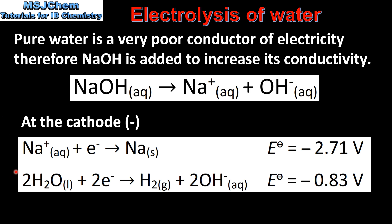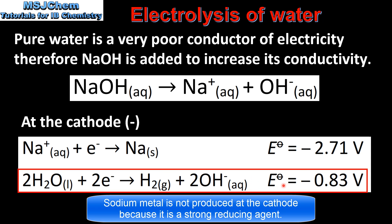Here are the two possible reactions that could take place at the cathode: the reduction of sodium ions to form sodium metal, and the reduction of water to form hydrogen gas. By looking at the electropotential values we can determine which reaction will take place. At the cathode, the reaction with a more positive electropotential will take place, therefore we'll have the reduction of water to form hydrogen gas.